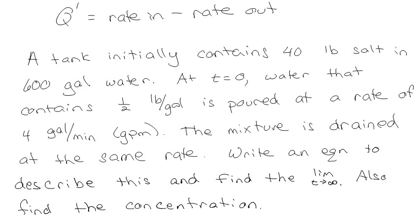We have a tank that has a certain amount of salt in it, in 600 gallons of water. We have water that contains a half pound per gallon, coming in at 4 gallons per minute, and we drain it out at the same rate — 4 gallons per minute. How do we mathematically describe what's going on here? What would be the steady state, or the limit as T approaches infinity? And we want to find the concentration of salt at any given time.